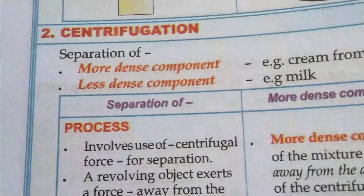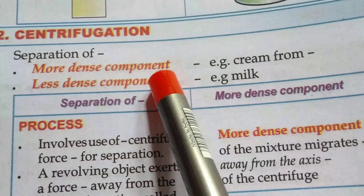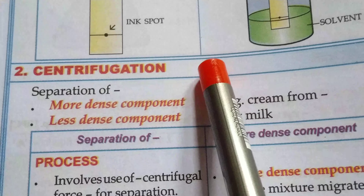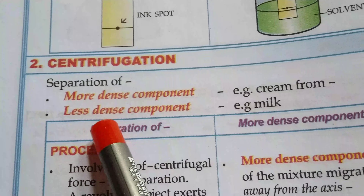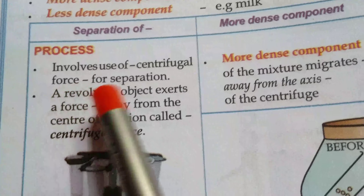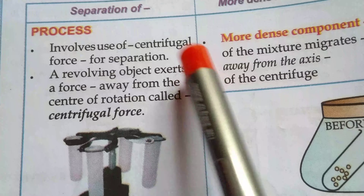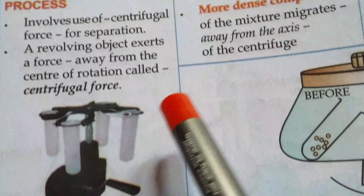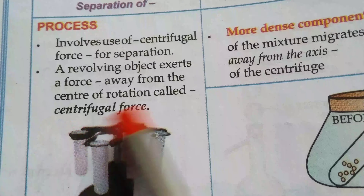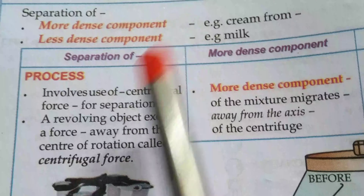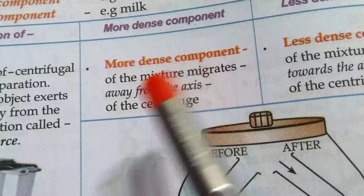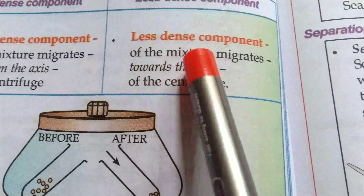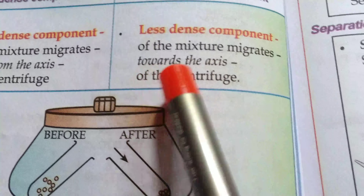Next, centrifugation — separation of a more dense component like cream from a less dense component, that is milk. Centrifugation is a process where we can separate out a more dense component from a lighter dense component. The process involves use of centrifugal force for separation. A revolving object exerts a force away from the center of rotation called centrifugal force. It is a centrifugal machine that applies centrifugal force to separate the more dense component from the less dense component.